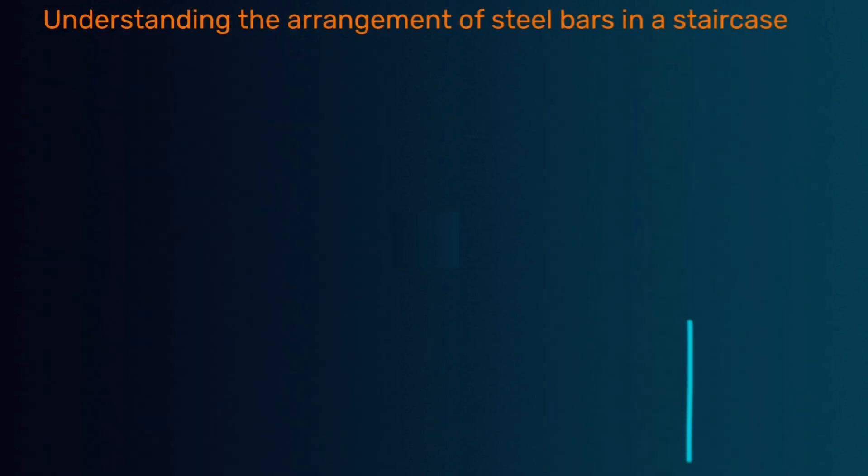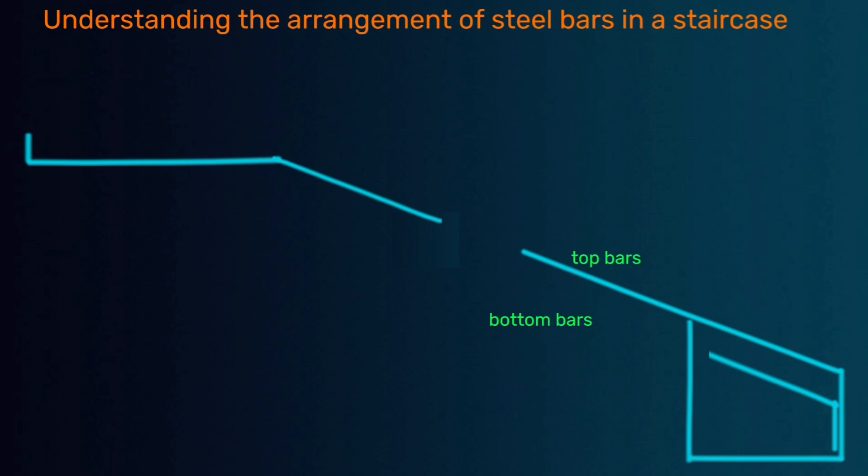A typical half-turn staircase usually has bottom bars which act as a foundation for the staircase, top distribution bars, bottom bars here and then with a gap here. This part usually has a gap depending on the structure drawing details with no top bars here.